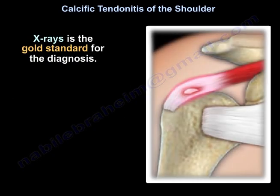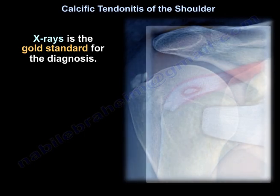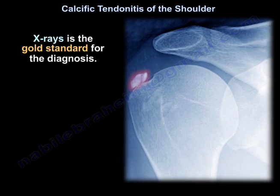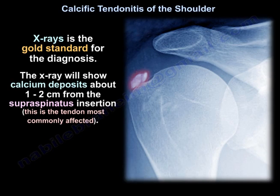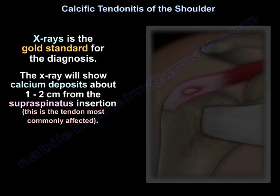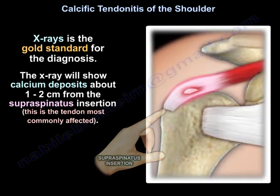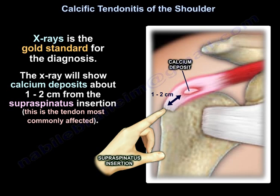X-rays are the gold standard for the diagnosis. The X-rays will show calcium deposits about 1-2 cm from the supraspinatus insertion. The supraspinatus tendon is the one that is most commonly affected.